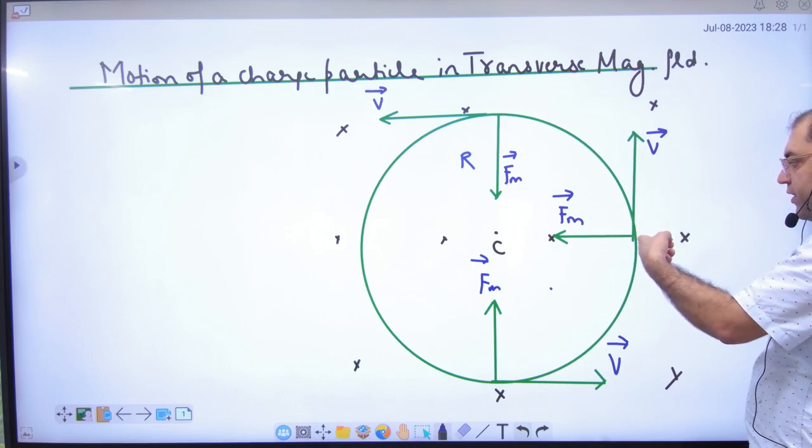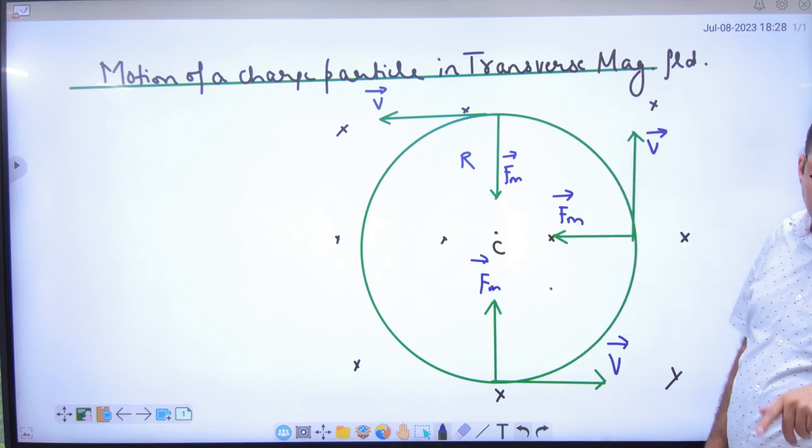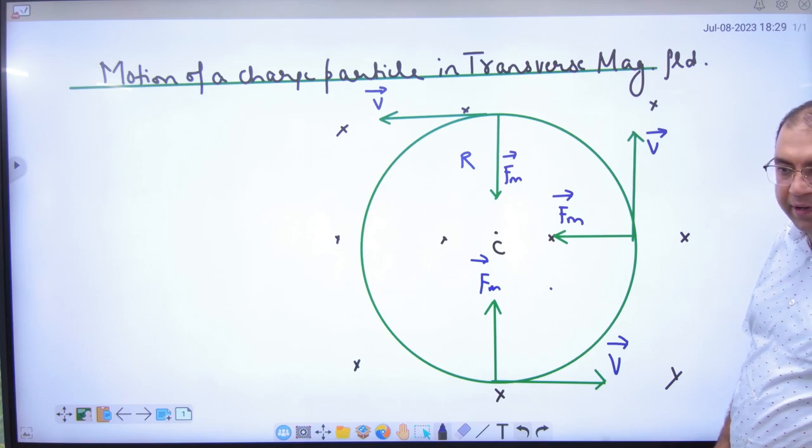B board is inside. V is here, force is here. Now look at the point of the force. Where will it be? Towards the center. What will it be? Centripetal.